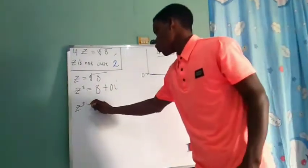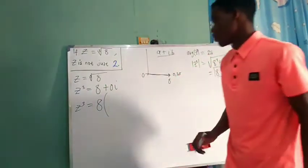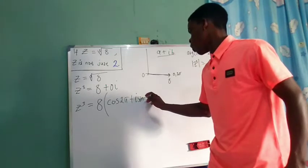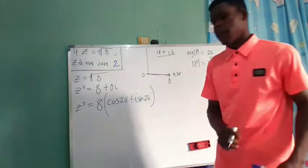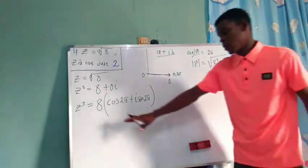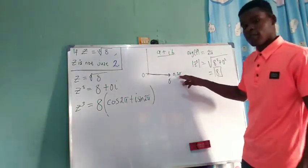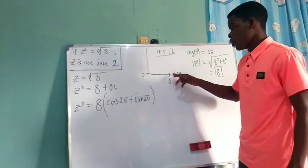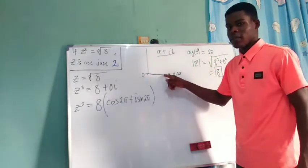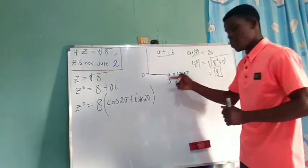For the polar form expression, z cubed equals 8 times the quantity cosine of 2π plus i sine of 2π. Now, take note: since we are at 0 degrees, if you add 360 to that, that is one full turn, and it gets back to the same point. That's why we have 2π. If you add another 2π, you have 4π, and it still lies on the same axis. Then 6π, 8π — all lie on the positive real axis.